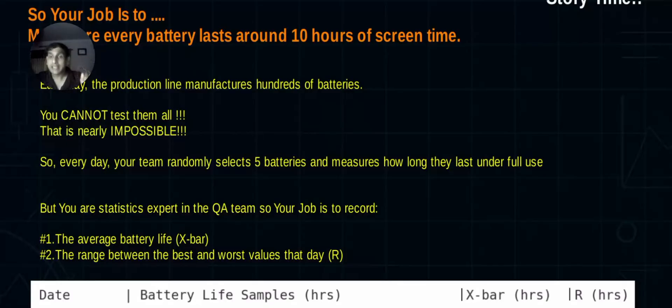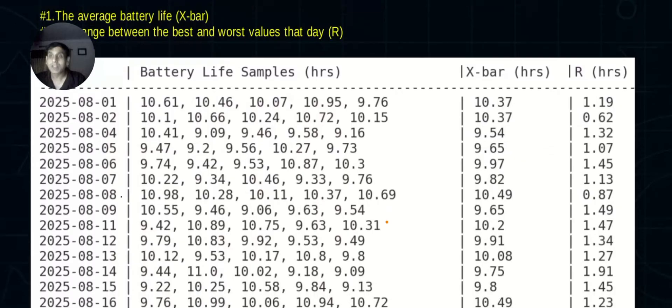So the phone company wants to make sure their customers will have a battery life of approximately 10 hours. Your job is very simple: make sure every battery produced lasts around 10 hours of screen time. You'll have a QA team. Every day hundreds and thousands of batteries will be produced, so you cannot test the batteries one by one.